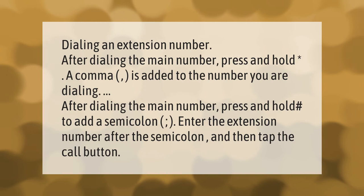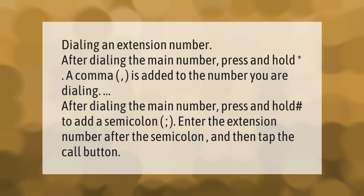To dial an extension number: after dialing the main number, press and hold the asterisk key — a comma is added to the number you are dialing. After dialing the main number, press and hold hash to add a semicolon. Enter the extension number after the semicolon, then tap the call button. Thank you for watching — please subscribe and hit the bell notification.